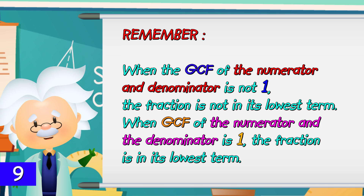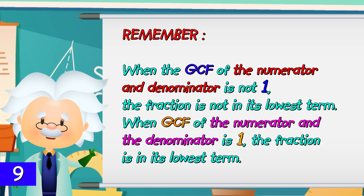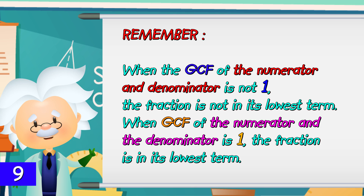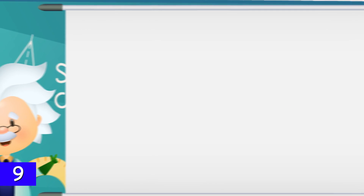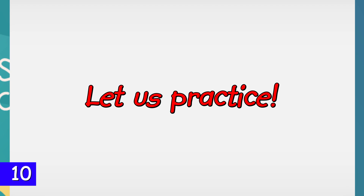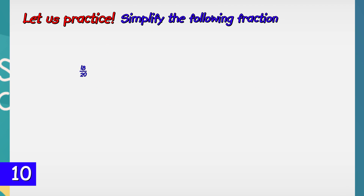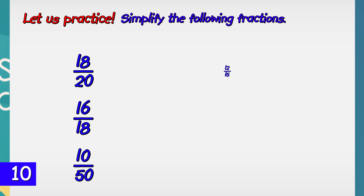Remember: when the GCF of the numerator and denominator is not 1, the fraction is not in its lowest term. When the GCF of the numerator and denominator is 1, the fraction is in its lowest term. Let us practice — simplify the following fractions.